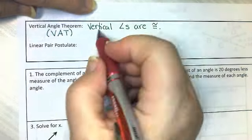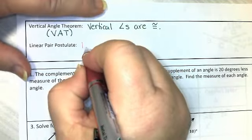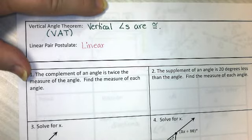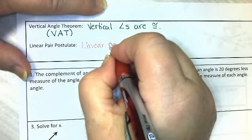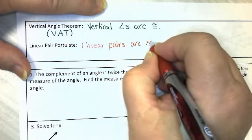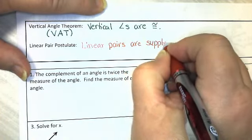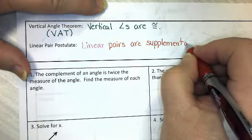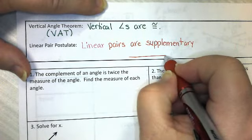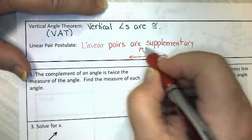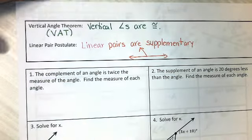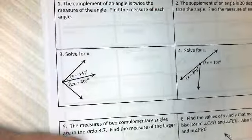The linear pair postulate we kind of talked about. It just says that linear pairs are supplementary. Linear pairs are supplementary. So if two angles form a linear pair, they're always going to add up to 180. So remember that picture. They made a straight line. These two angles are always going to add up to 180 because they're a linear pair. Alright, let's practice that with some pictures.